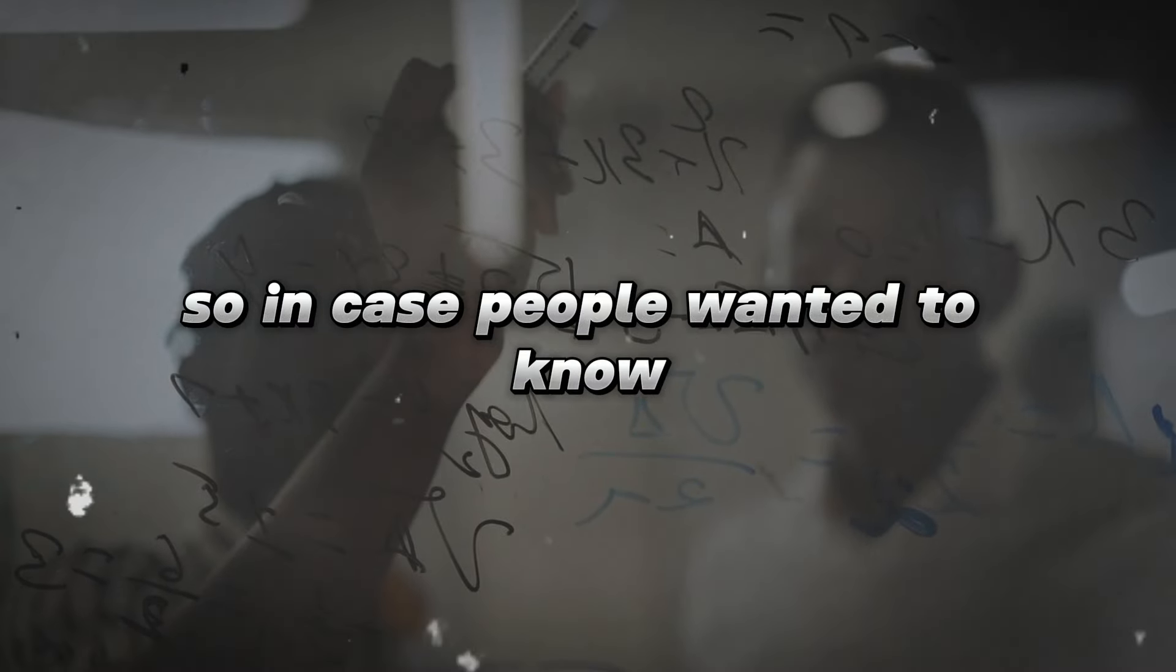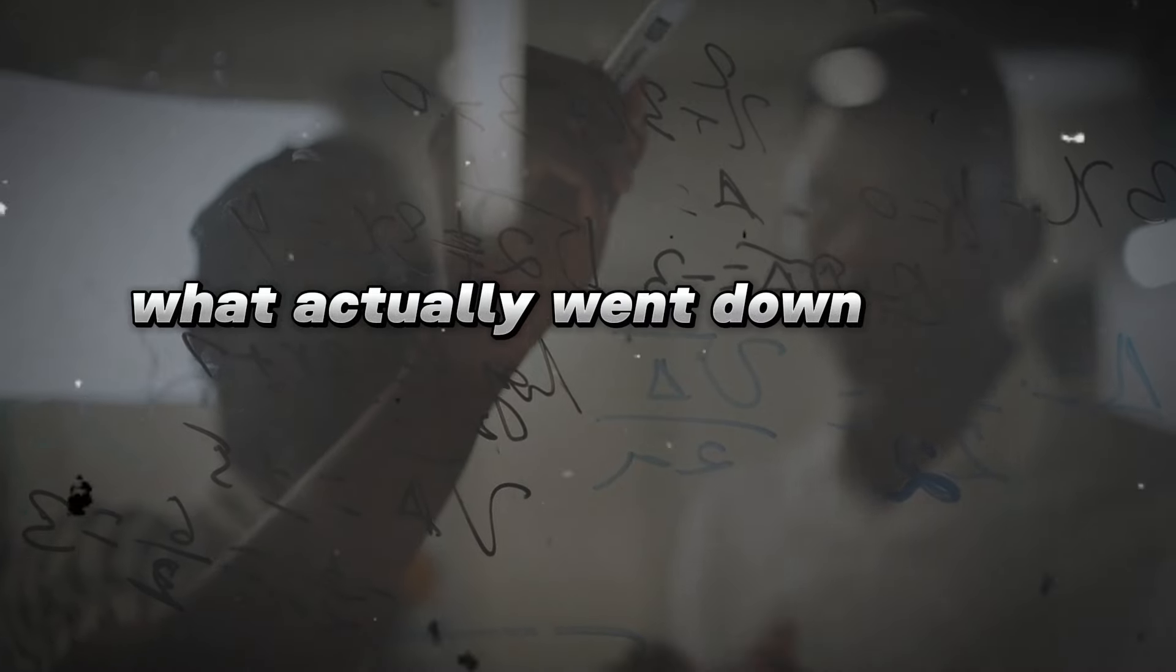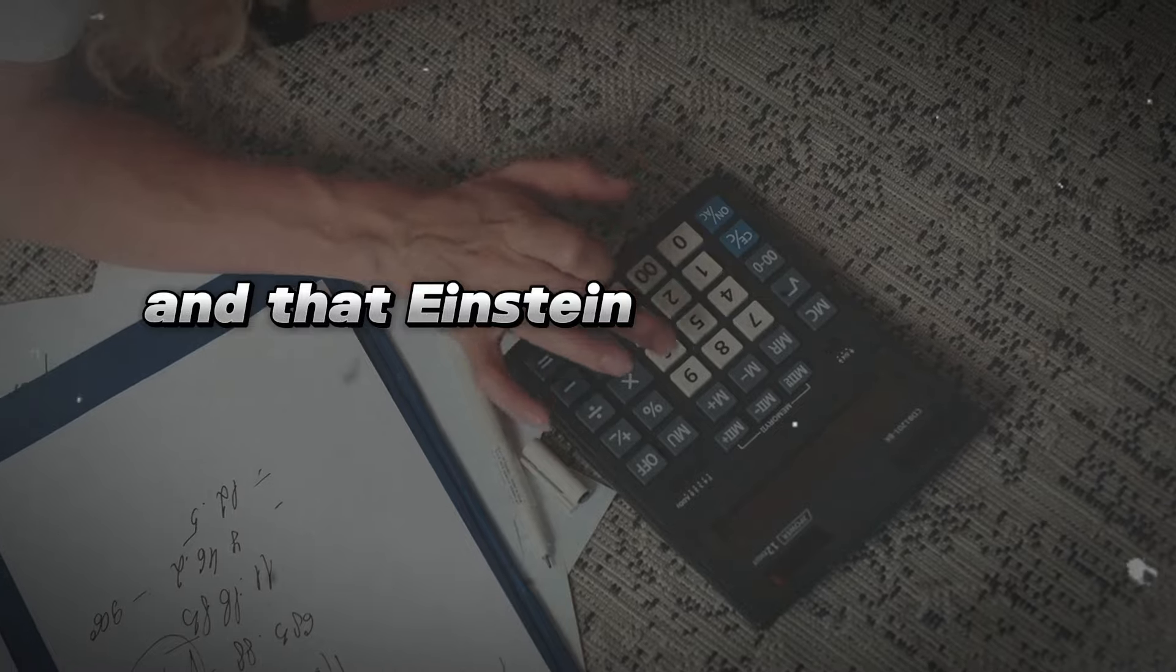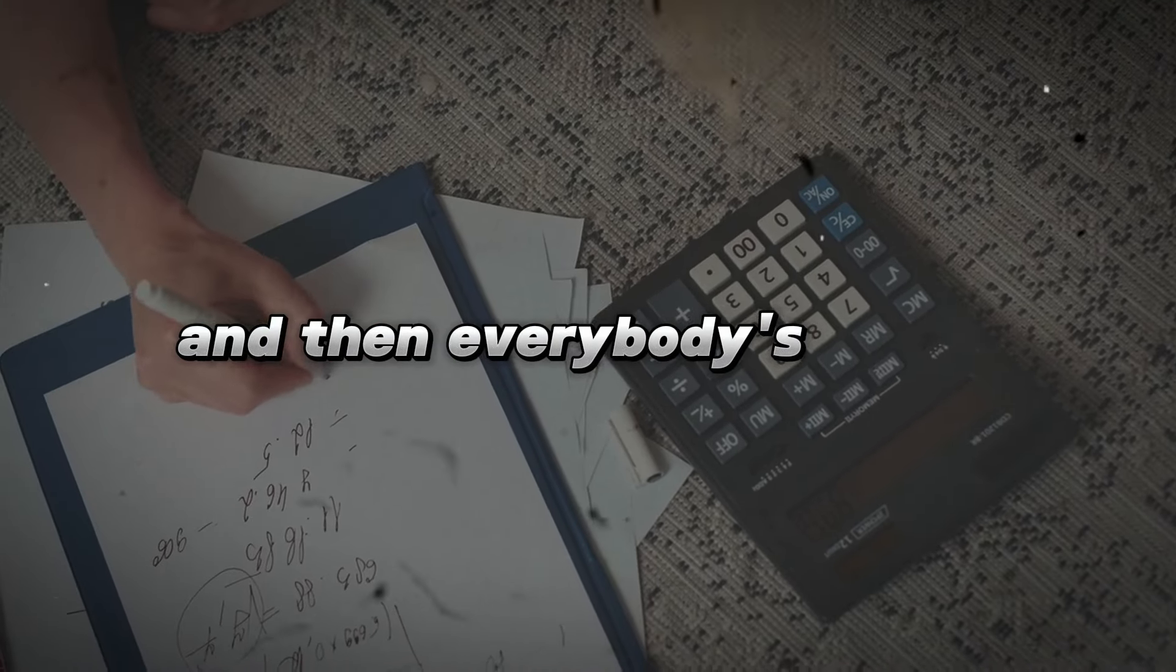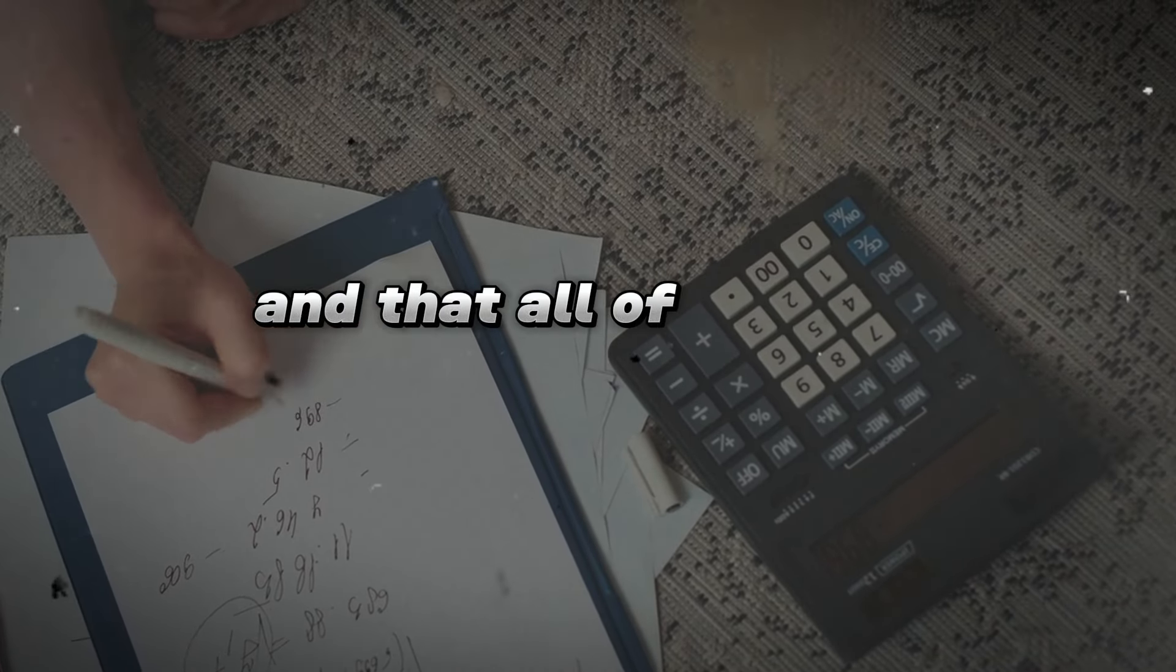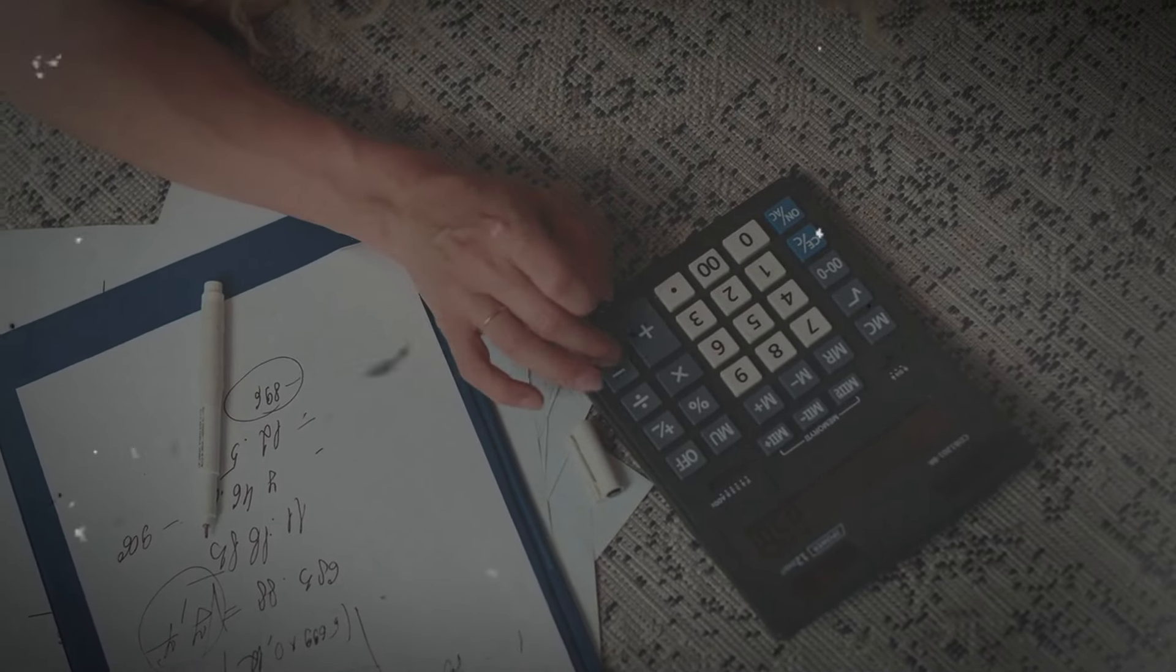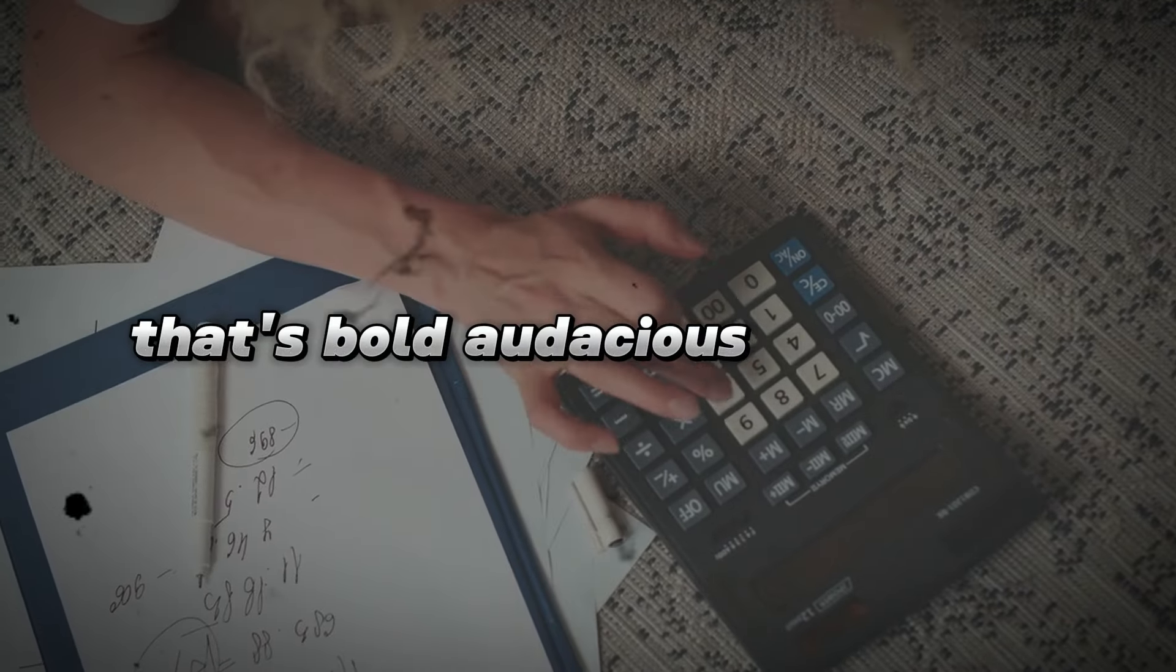So in case people wanted to know what actually went down eight years ago, just always be cautious of the Dunning-Kruger effect. You put in a little bit of work and you have an idea, and then you think your idea is right and that Einstein is wrong and Newton is wrong and that everybody's wrong, and that all of modern astrophysics are wrong. That's bold. That's bold, audacious, bodacious.